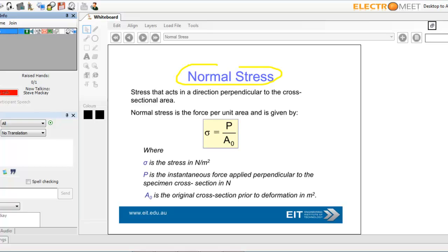Stress is force per unit area in newtons per square meter, because force is in newtons and area is in meters squared, or sometimes millimeters squared. Sigma is stress in newtons per square meter. T is instantaneous force applied perpendicular to the cross section in newtons, and of course, the area.